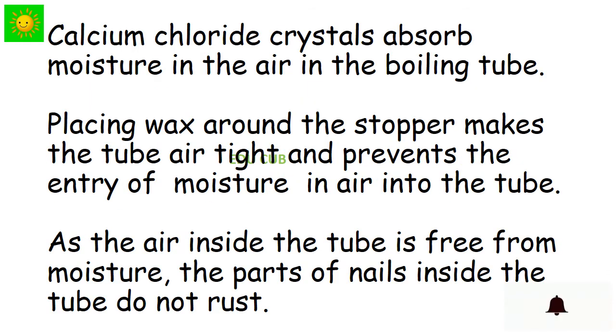Calcium chloride crystals absorb moisture in the air in the boiling tube. Placing wax around the stopper makes the tube airtight and prevents the entry of moisture in air into the tube. As the air inside the tube is free from moisture, the parts of the nails inside the tube do not rust.